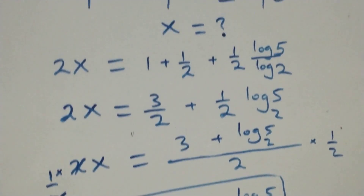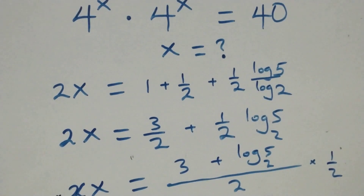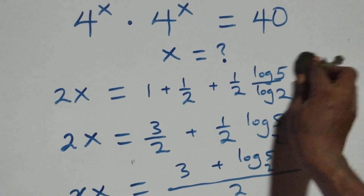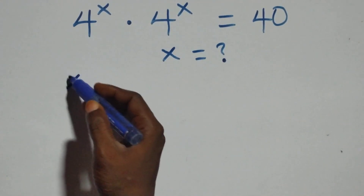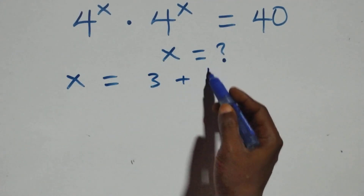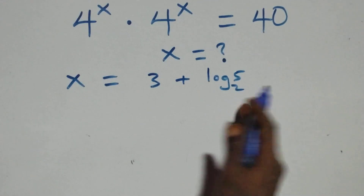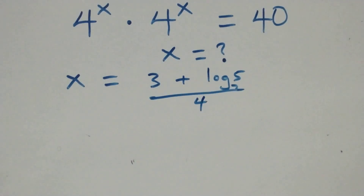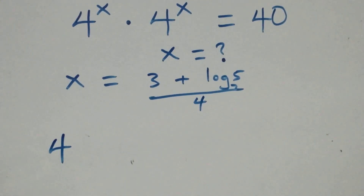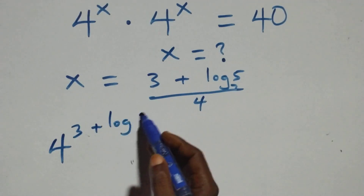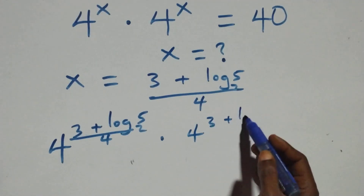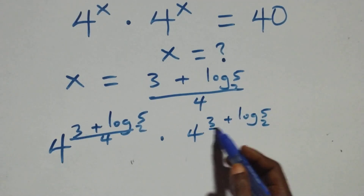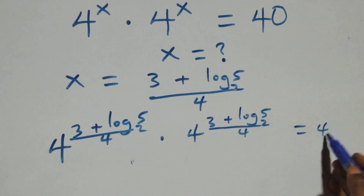Then let's check here if this satisfies the given problem. At this, we substitute the value x equals (3 + log₂5) / 4. Then what we have here becomes 4 raised to power (3 + log₂5)/4 times 4 raised to power (3 + log₂5)/4, which should equal 40 on this side.